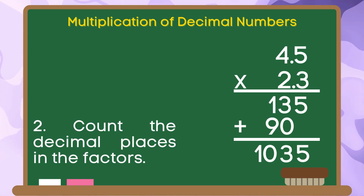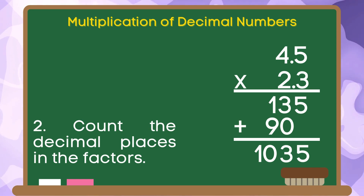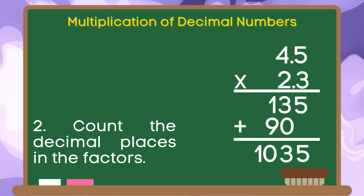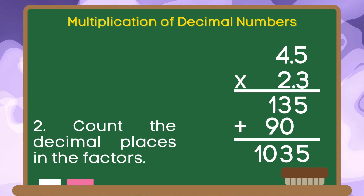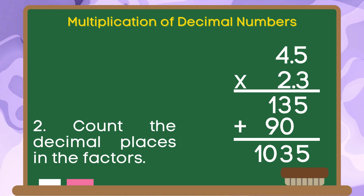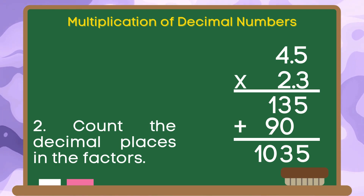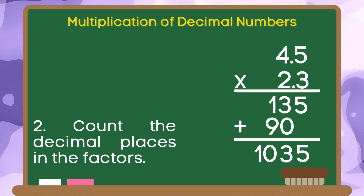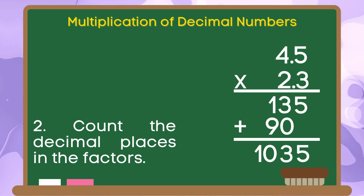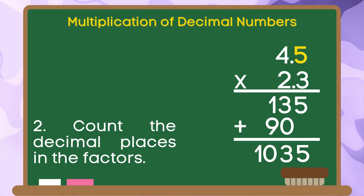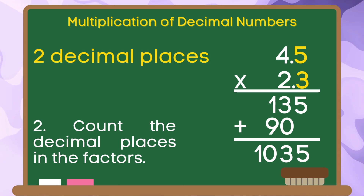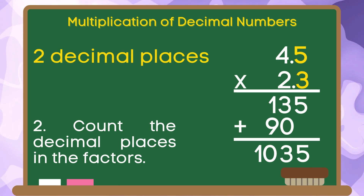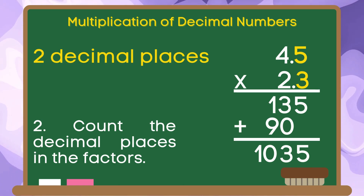Let us do step 2: count the decimal places in the factors. In this example, both multiplicand and multiplier have decimal places. We are going to combine the number of decimal places in these numbers. 1, 2. Therefore, in this example, we have 2 decimal places.